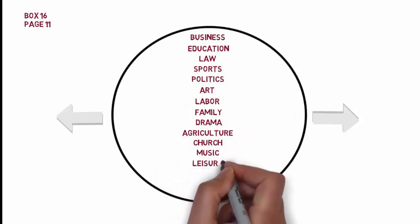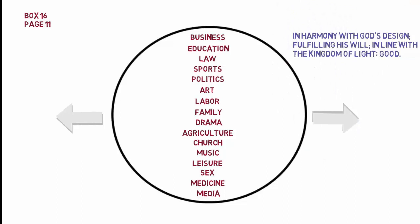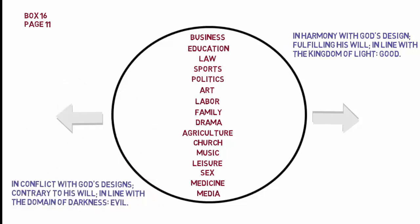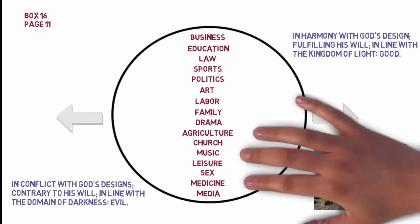You can list every endeavor known to humanity in the center of the circle, from business, education, and law, to medicine and media. Any one of these endeavors can either be done in harmony with God's design, fulfilling his will, in line with the kingdom of light or good, or we can work in conflict with God's design, contrary to his will, in line with the domain of darkness or evil. John Beckett chose to intentionally align his business policies with God's design. But that same business could also be done in a way that conflicts with the design of God.